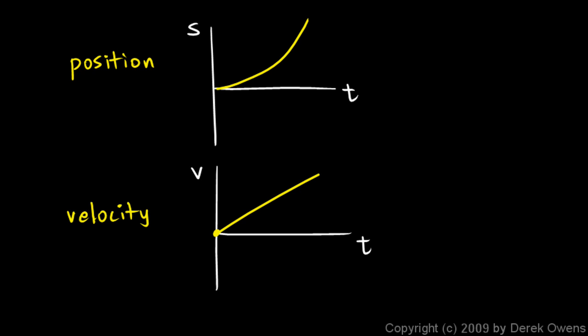Now if there were numbers on these graphs, if you were to go to a particular point and calculate the slope right at that point — how steep is the graph, give me a number for the slope — at that same moment in time on this graph, the number that you had for the slope up there would be the value of the v graph right there. At any given point, the slope of the s graph is equal to the value of the v graph at that corresponding point in time.